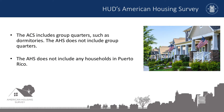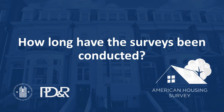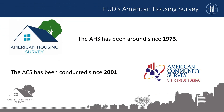Another key difference: the ACS includes group quarters, such as dormitories. The AHS does not include group quarters. Finally, the AHS does not include any households in Puerto Rico, where the Census Bureau conducts a version of the ACS for Puerto Rico called the Puerto Rico Community Survey. The AHS has been around since 1973, while the ACS has been conducted since 2001.